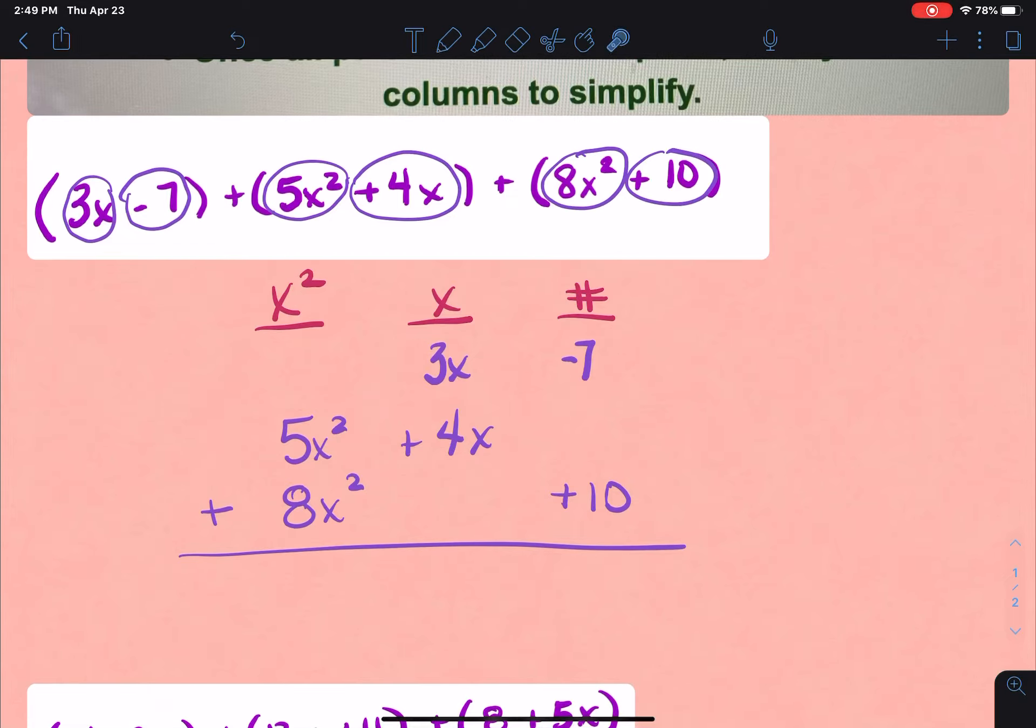Now we're going to go through and just total our columns like we've done before. So in this first column, I know it's all going to be x², so x² are going to go there. And if I total these up, 5 plus 8 is going to be 13, so it's 13x². If I go to the next column, these are all x's, so I know it's going to be an x down here. 3 plus 4 is going to be 7, and since it's a positive 7, I'm going to write plus 7. Then if I go to this last column, those are all numbers. So negative 7 plus 10 is going to be positive 3. So these are very similar to what you were already doing, just adding an additional set of parentheses.